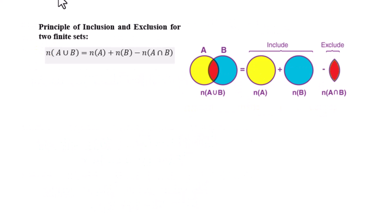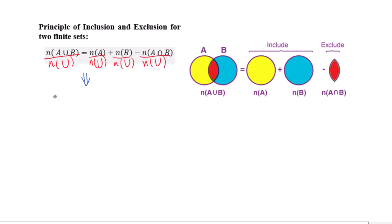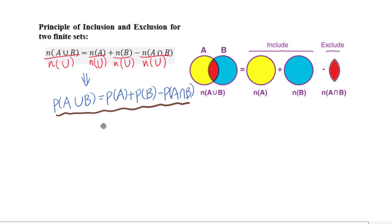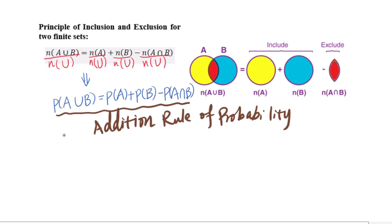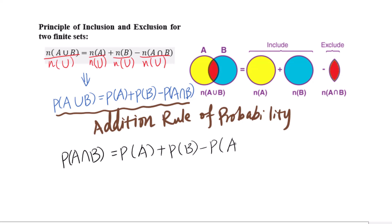If we divide by the number of elements in the universal set, we get probability. That is, the probability of A∪B equals probability of A plus probability of B minus probability of A∩B. We call this the addition rule of probability. We can also rearrange to get: probability of A∩B equals probability of A plus probability of B minus probability of A∪B.